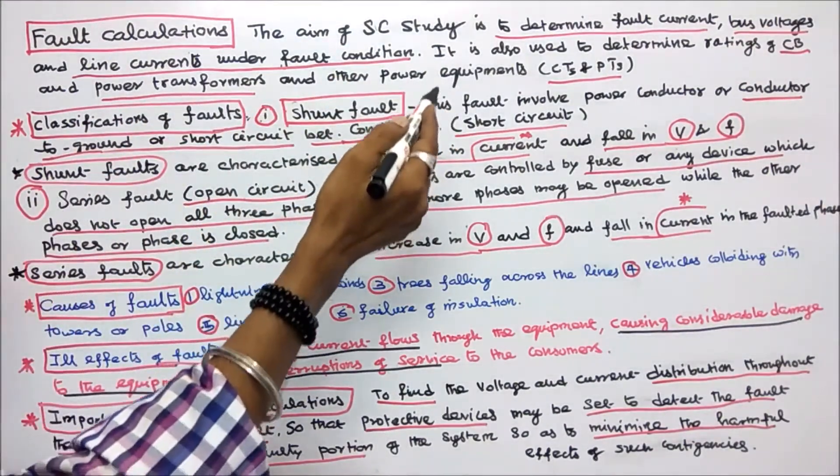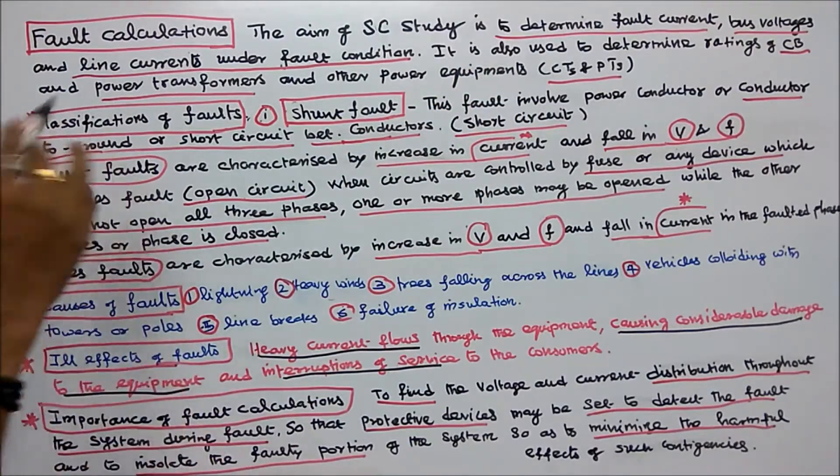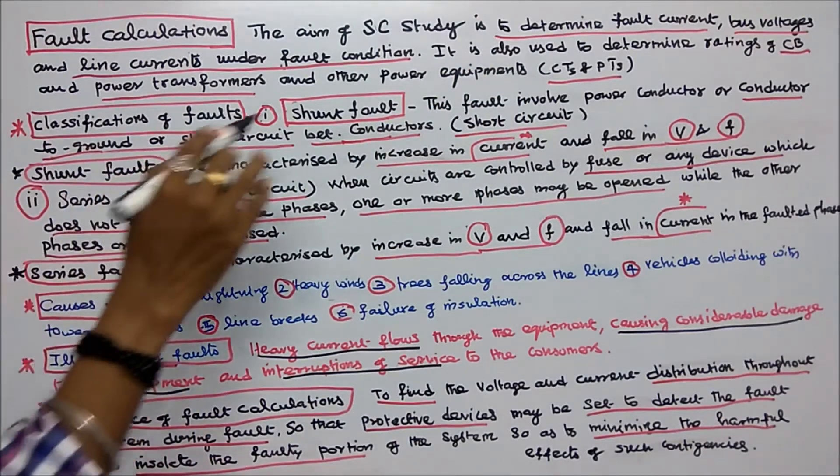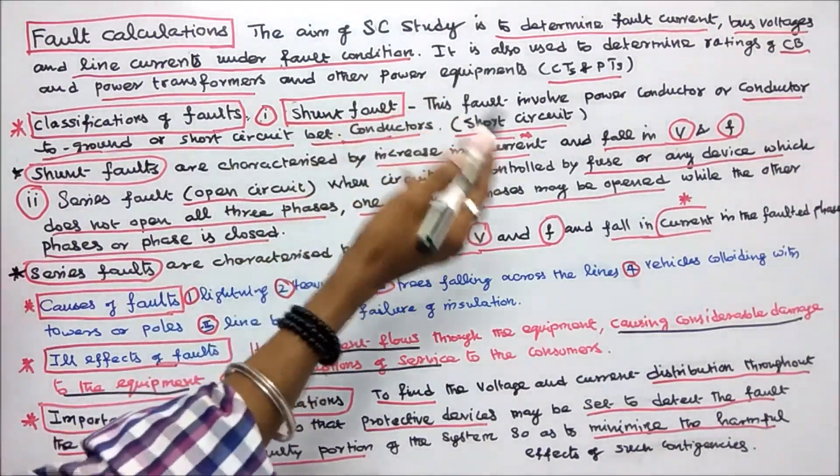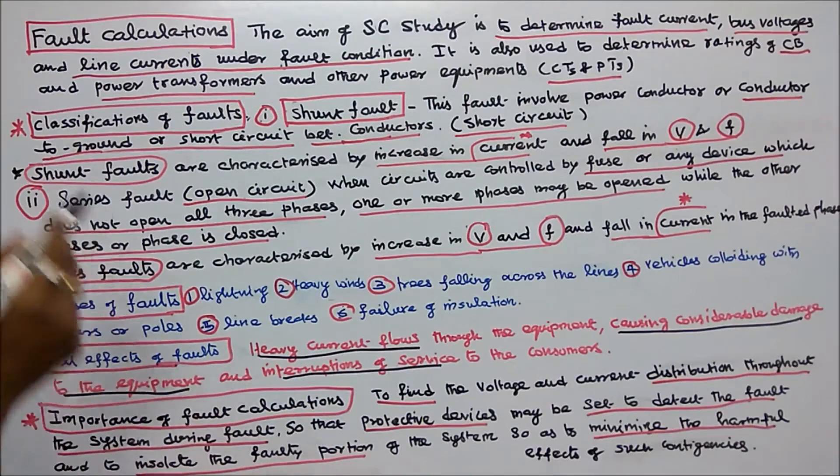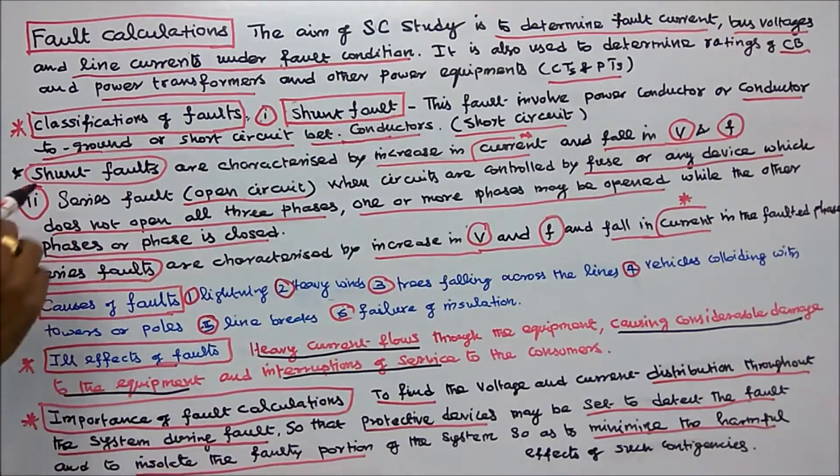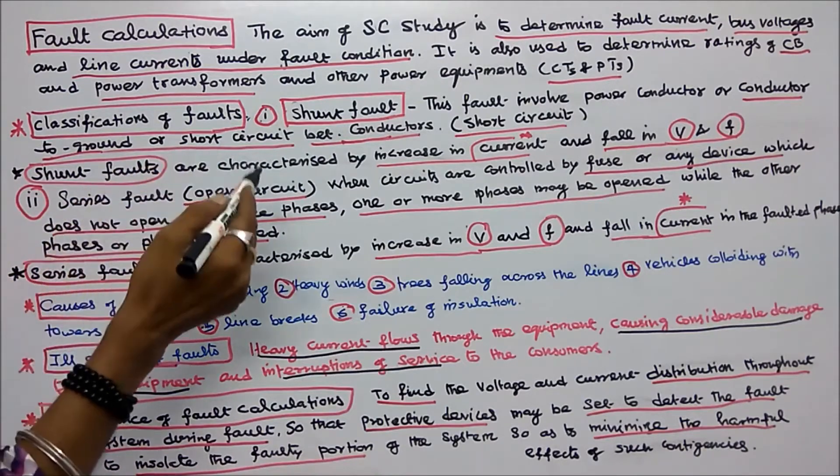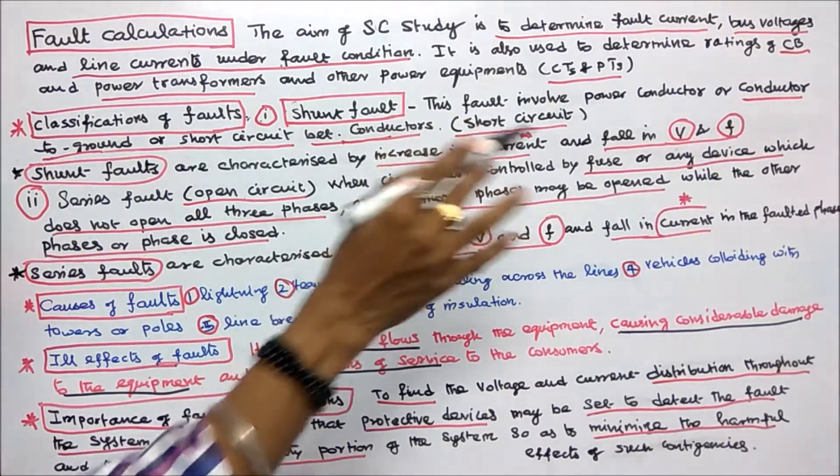Faults are classified as: Number one, shunt fault, that is short circuit. This fault involves power conductor to ground or short circuit between conductors. Shunt faults are characterized by increase in current and fall in voltage and frequency.